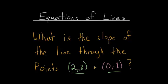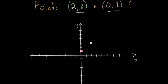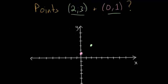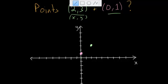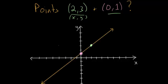To do this, let's first plot these two points on a coordinate axis. This point (2, 3) — we go over 2 in the x direction and up 3 in the y direction. Remember the first coordinate is always x and the second is always y. Then for this pink point (0, 1), it's 0 in the x direction — that's along the y-axis — and just up 1 for the y value. So we have these two points and now we can connect them with a line.